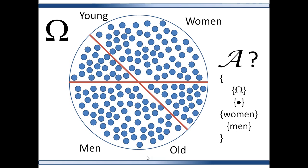A set containing young men and old women, a set containing young women and old men, and several others. Of course, the outcome set and the null set are also in there. So you see, the more subsets in the sigma algebra, the more information you get.